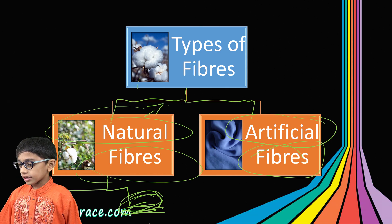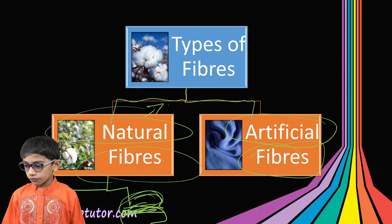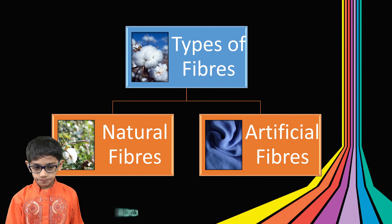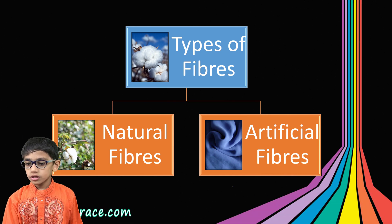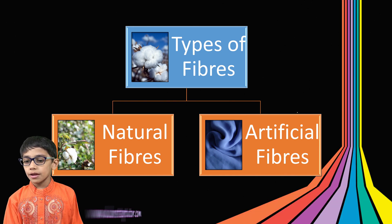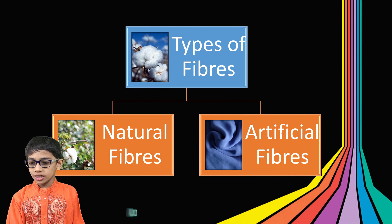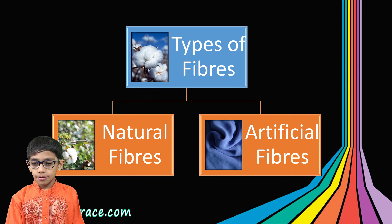Silk is obtained from the silkworm. Artificial fibers include nylon, polyester, and others.